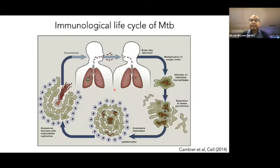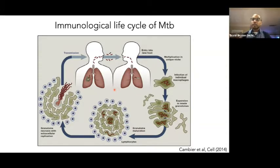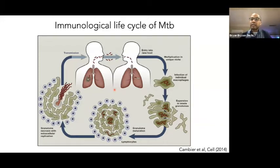To give everybody a TB 101 at the 30,000 foot view — tuberculosis is transmitted via aerosol. An infected individual will cough, bacteria in the airway dropletize into droplets, another individual inhales those droplets, and the bacteria make their way down into the alveolar space of the lung. The alveolar space, like many tissues exposed to the environment, has immune cells that surveil the area to understand if there's a foreign pathogen. One of those frontline innate immune cells contributing to immune defense is what's called a macrophage.